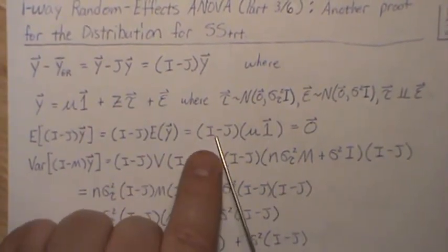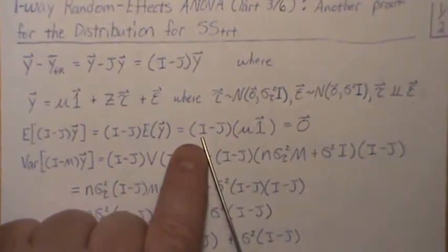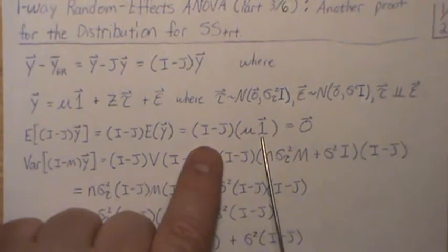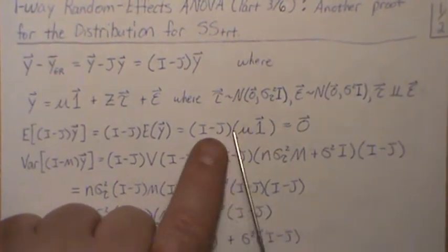But this is I - J, so it's a perpendicular projection matrix on the orthogonal complement space of the column space of ones. But we live in a space. But since this is one, it's orthogonal to that, so it goes to zero. So the mean of this is zero.